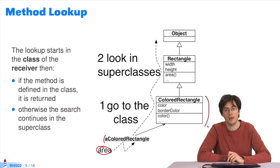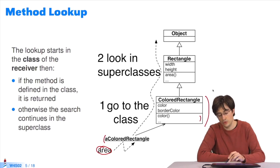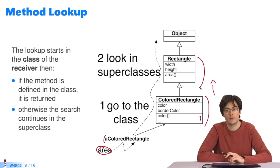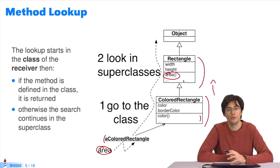It looks for an area method in that class. The lookup algorithm will not find the method area in that subclass, so it will look elsewhere. It looks in the superclass rectangle. It finds the method area there and returns it. The lookup algorithm is done when it finds a method.